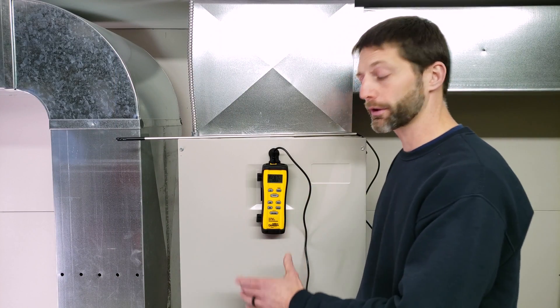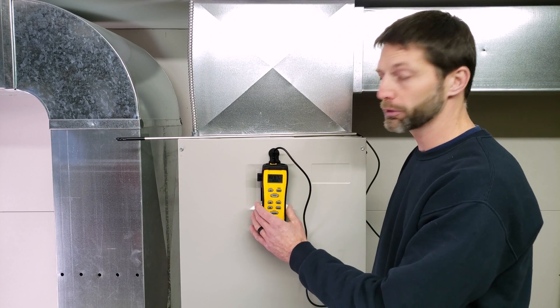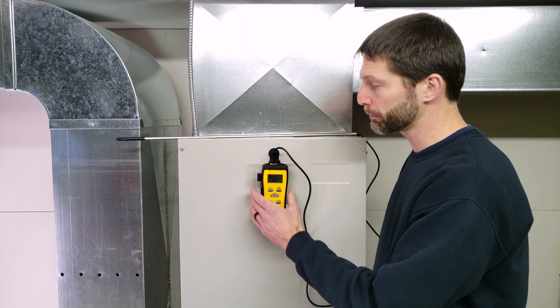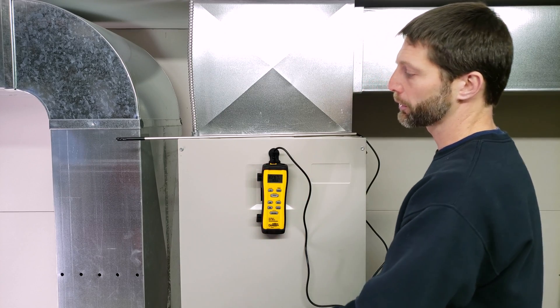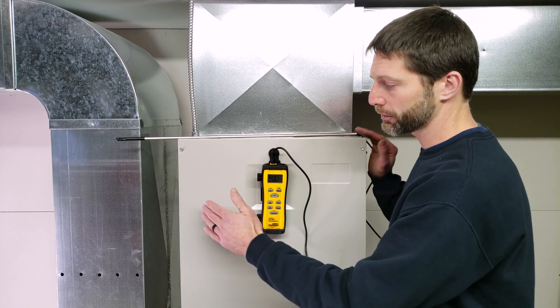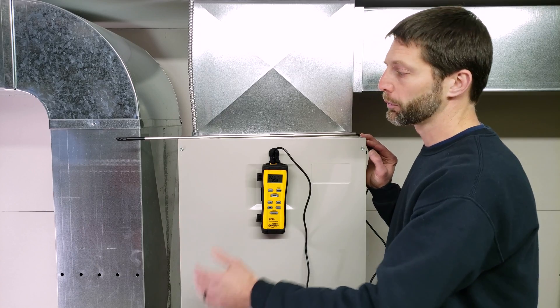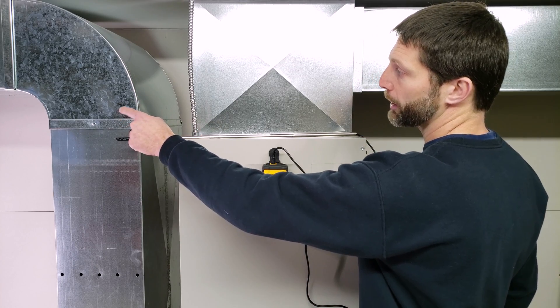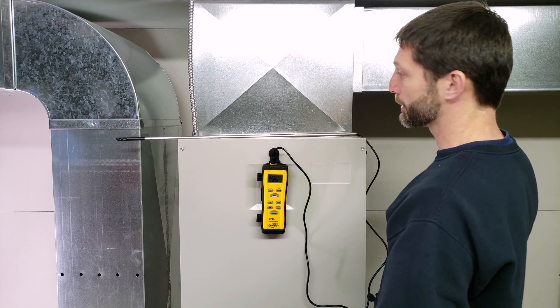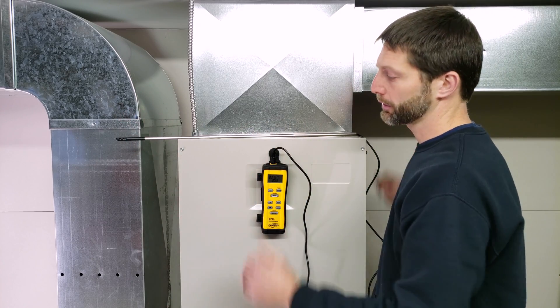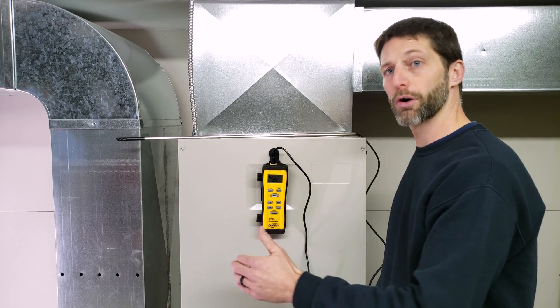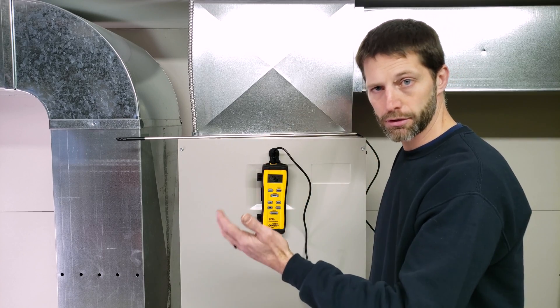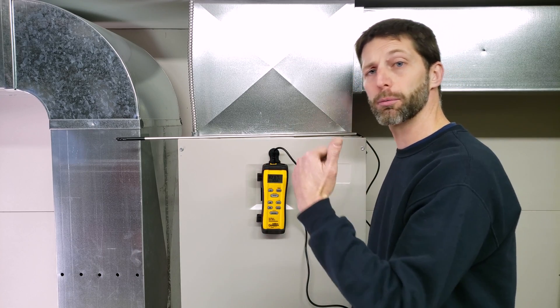Now that we measured our CFM with our in-duct anemometer, we're using the temp rise formula to verify this measurement. We'll temporarily shut the system off and take the cover off. We'll take an amperage reading on the electric strip heater and a temp rise between return duct and supply duct. Once our meter is in place, we'll turn the system on to do our calculations.